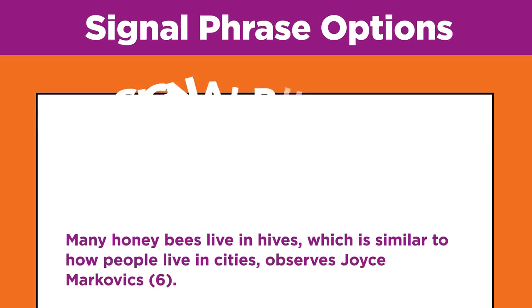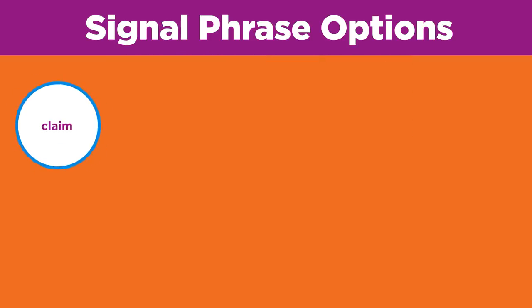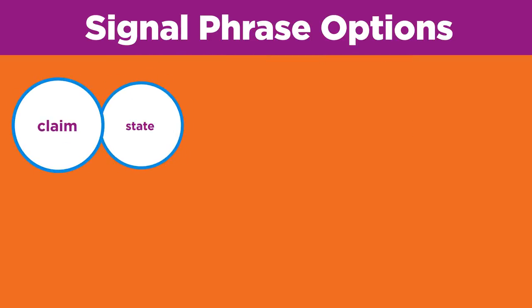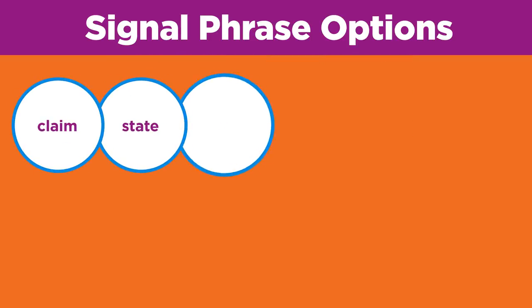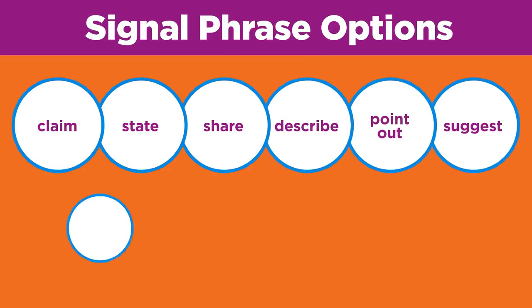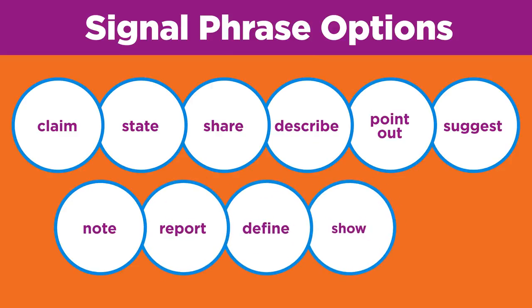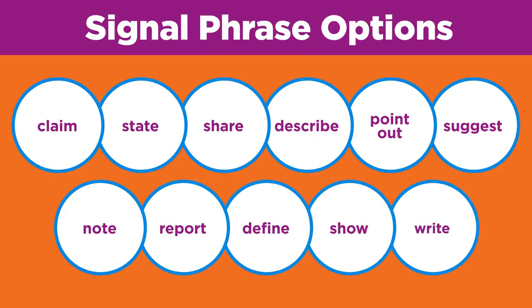Signal phrases use verbs. Some other verbs you could use are: claim, state, share, describe, point out, suggest, note, report, define, show, and write.